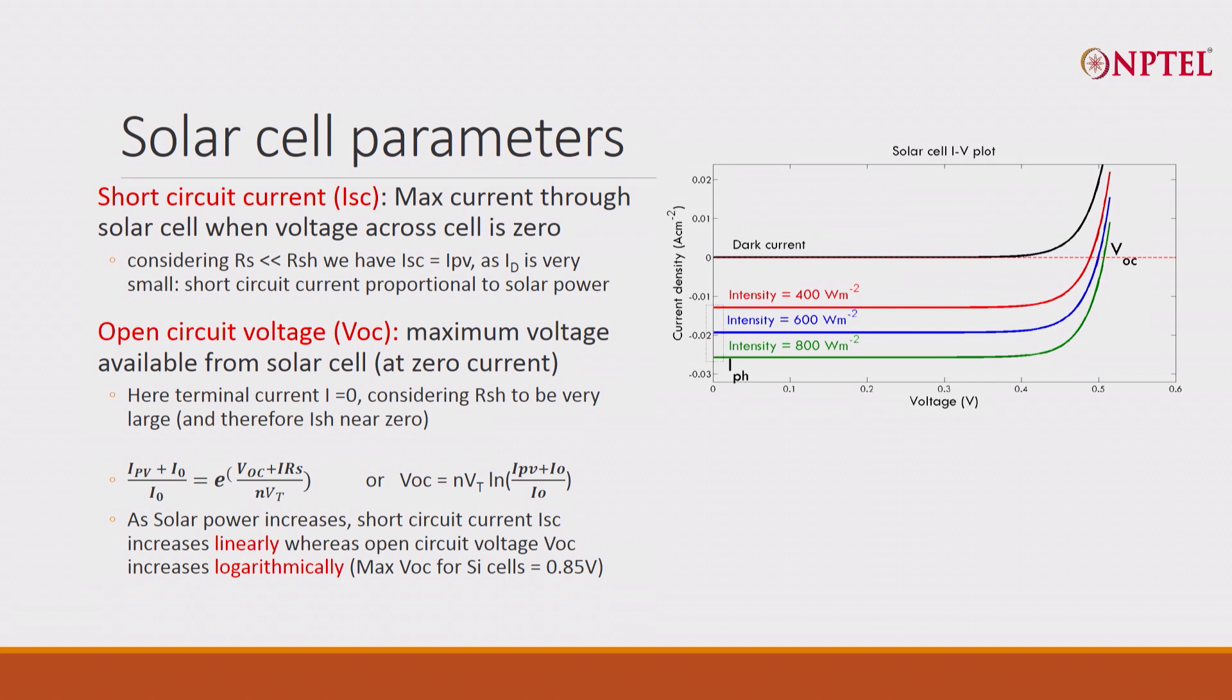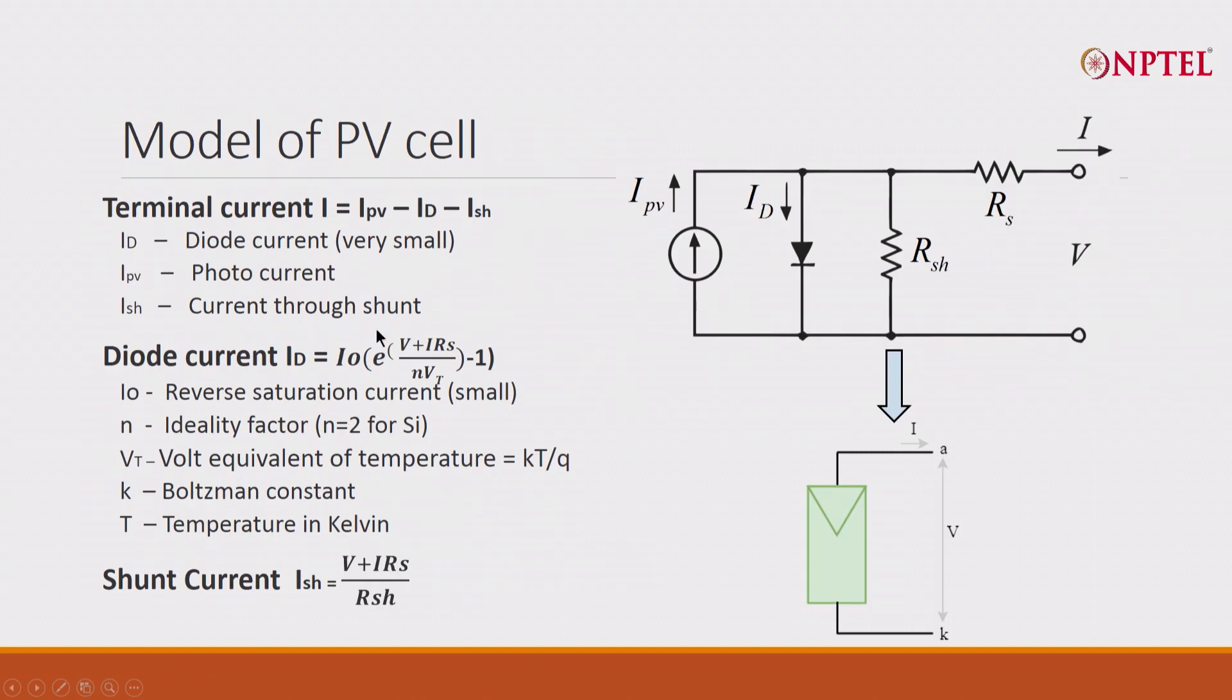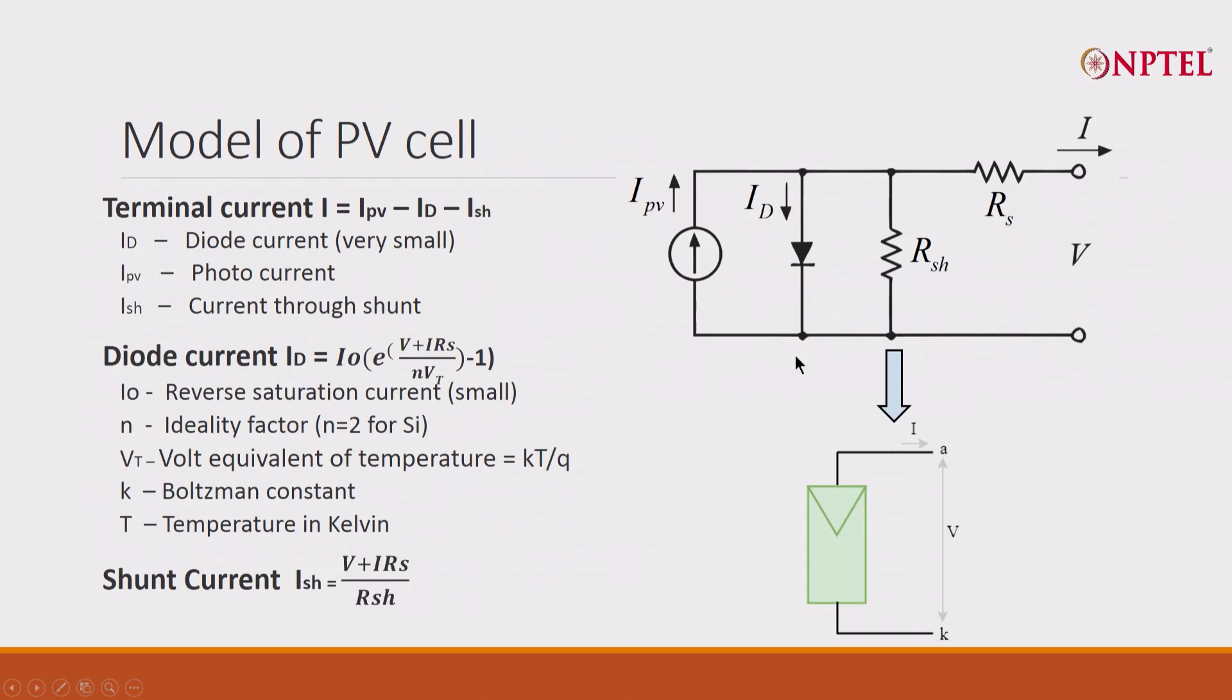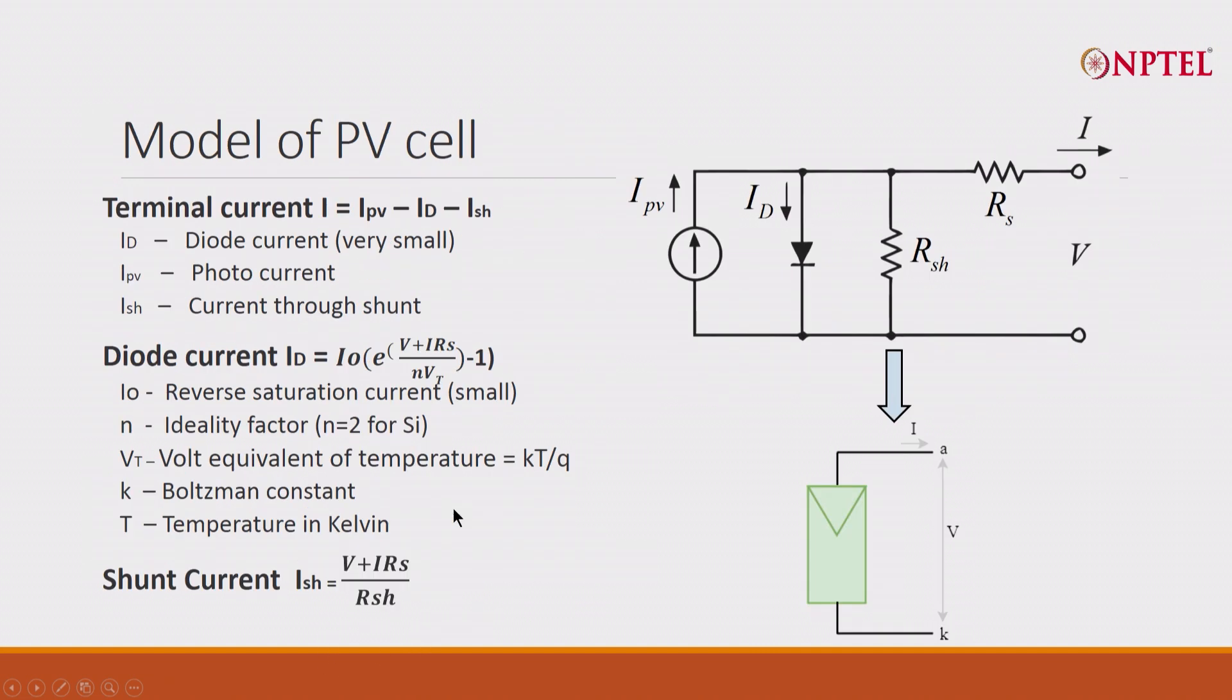And open circuit voltage—your normal voltage—open circuit voltage is given when there is no current. And when there is no current, basically what you are saying is that I is zero. And therefore, you can now calculate.